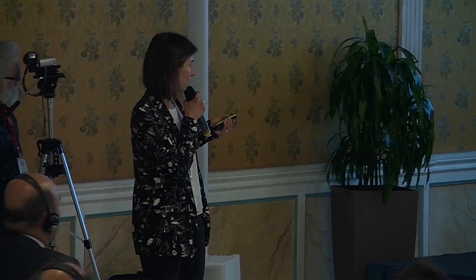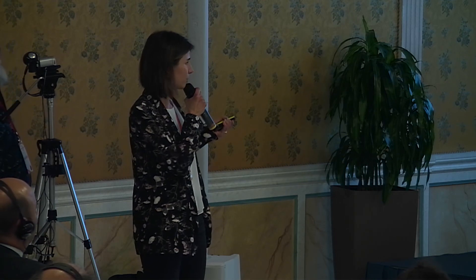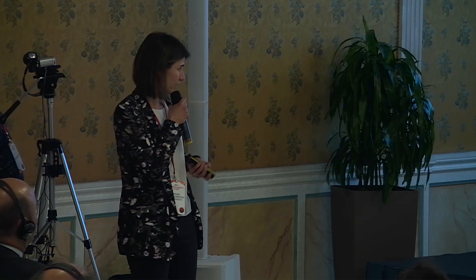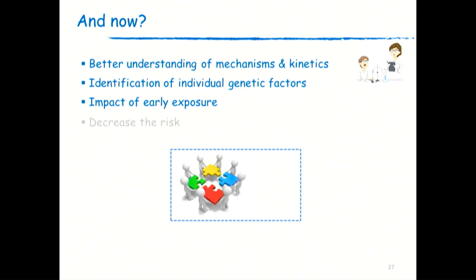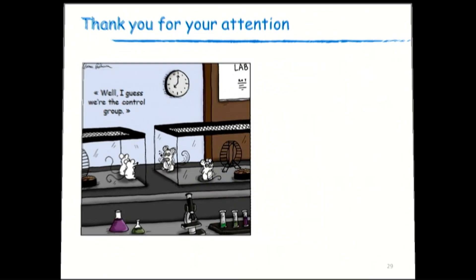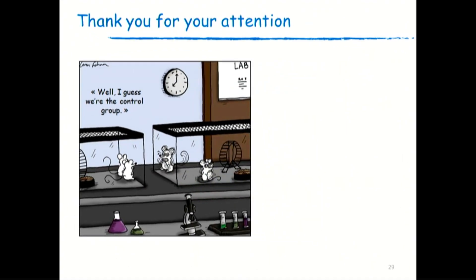For the first three research points, we need two things: people working together — and we need more people, because I think not enough researchers are working on this very important public health topic. And in research, people means money — so we need funding to perform our research projects. Thank you for your attention.